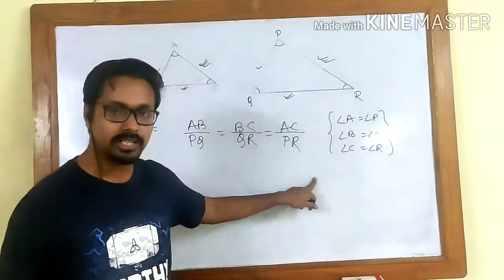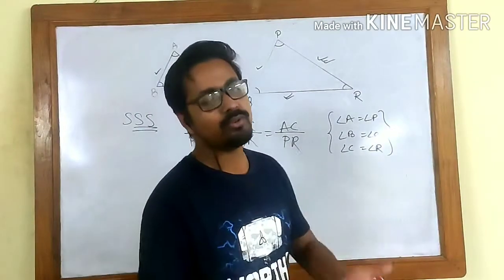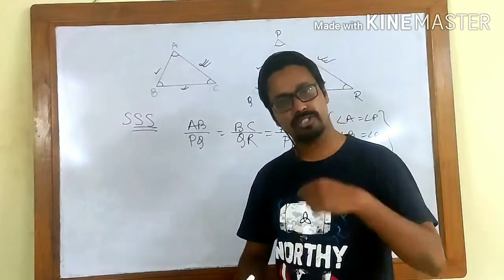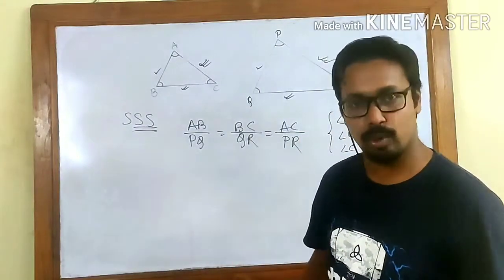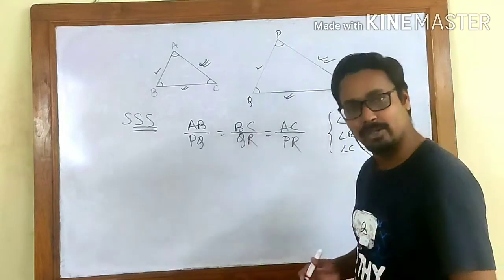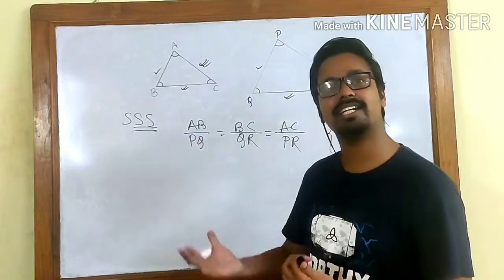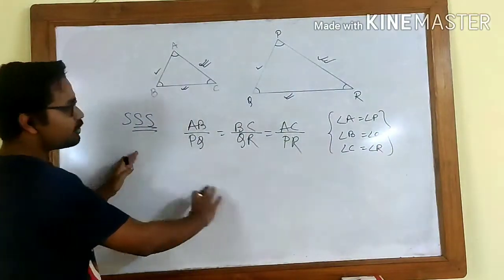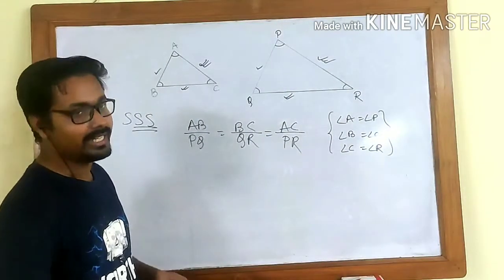If you take any two triangles and you see that the sides are proportional, when you check the angles you will find that the angles are also equal. And if you see that the angles are equal and you check the sides, you will find that the sides are in proportion. That is all we have about the Side-Side-Side criteria, which is the second criteria.